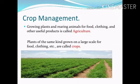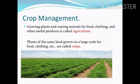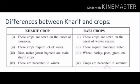So first, what is agriculture? Growing plants and rearing animals for food, clothing, etc. is called agriculture. And crops — the plants of the same kind which are grown on a large scale are called crops.